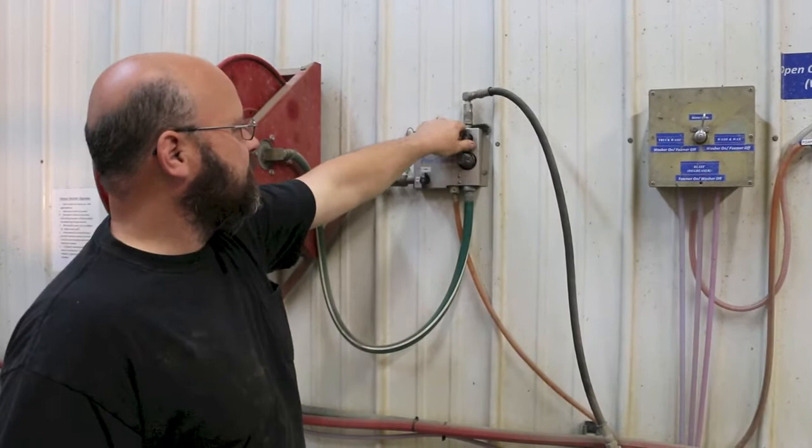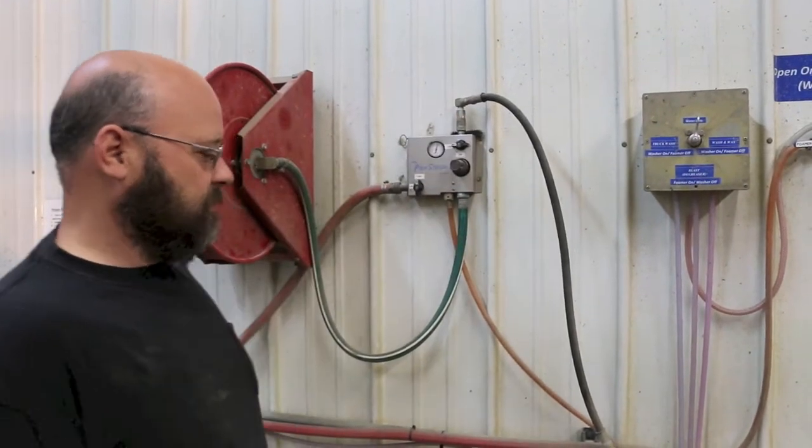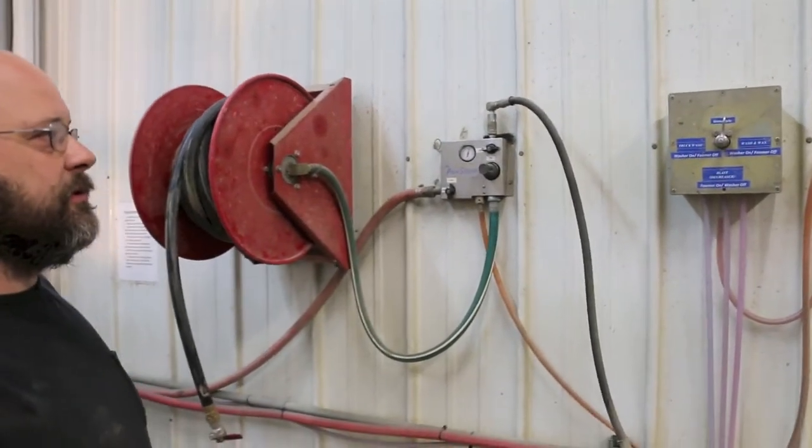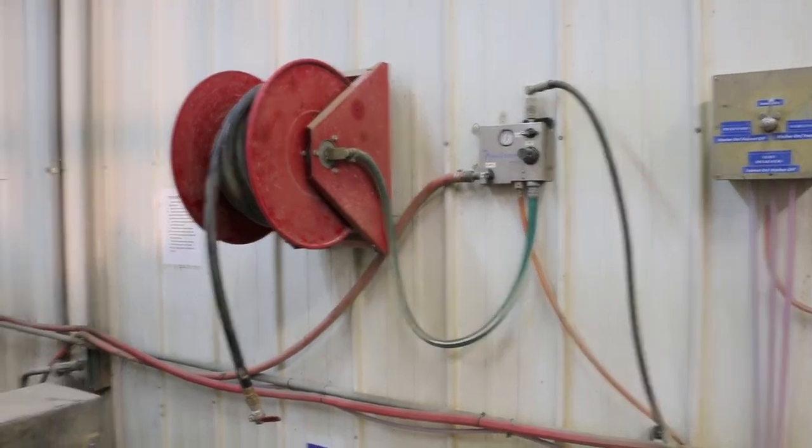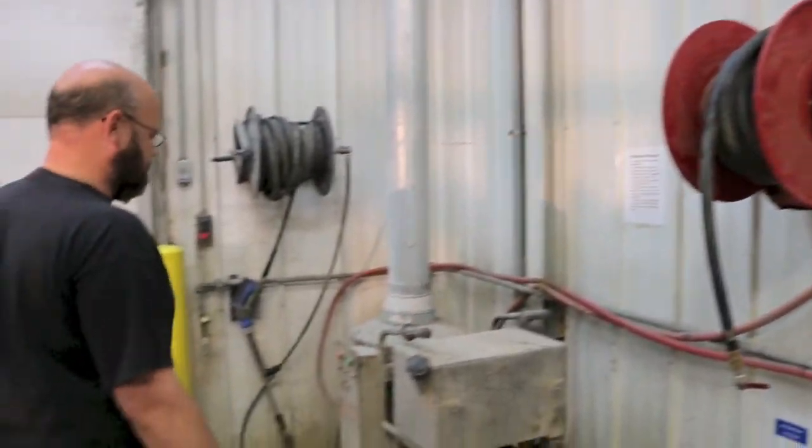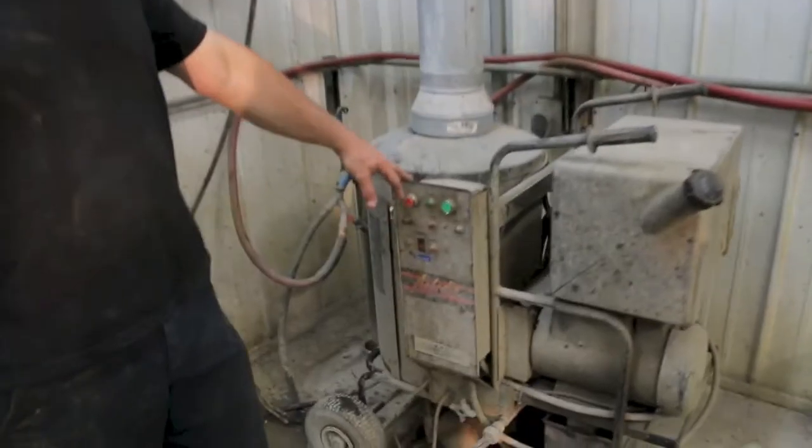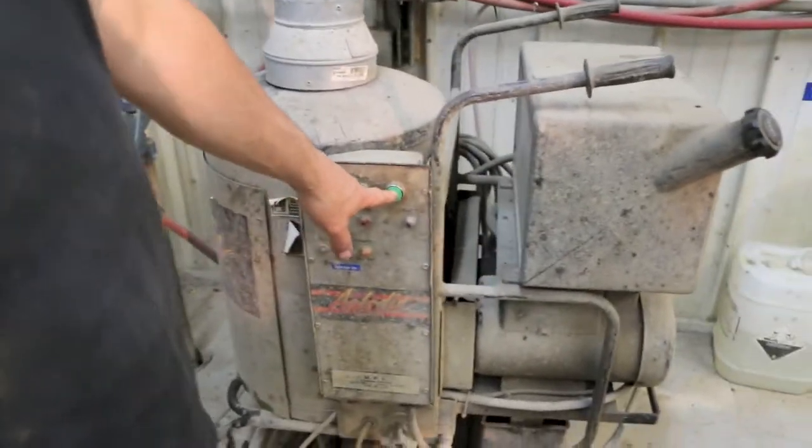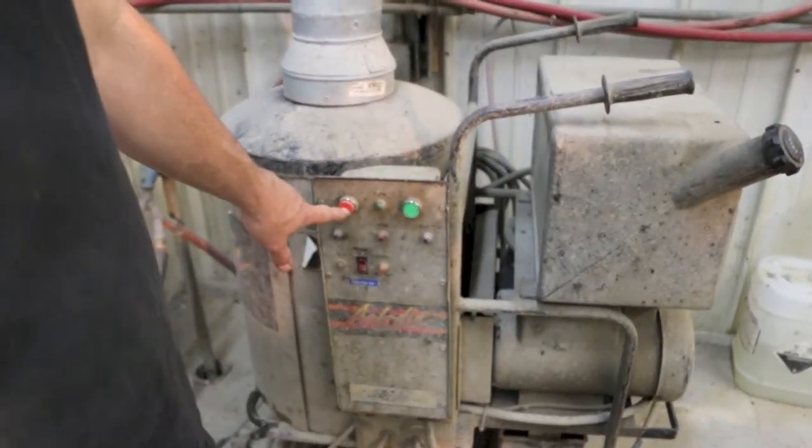When you're done, turn them off. And that should be it for using the foamer. Now to run the pressure washer, fairly simple. Here's the start, the green button. The red will turn it off.